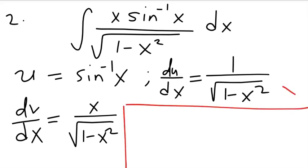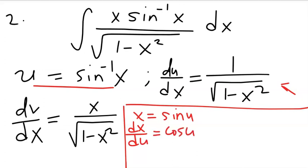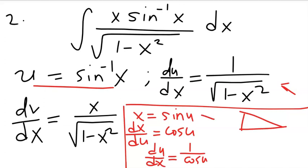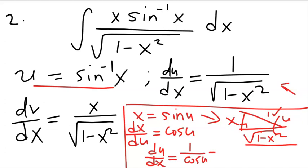Since u = arcsin(x), then x = sin(u), so dx/du = cos(u), meaning du/dx = 1/cos(u). Representing this with a right-angled triangle where the angle is u and sin(u) = x over 1, the remaining side is √(1−x²). From this triangle, cos(u) = √(1−x²), so du/dx = 1/√(1−x²).